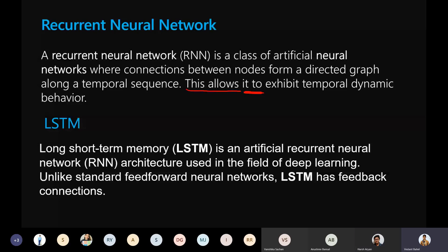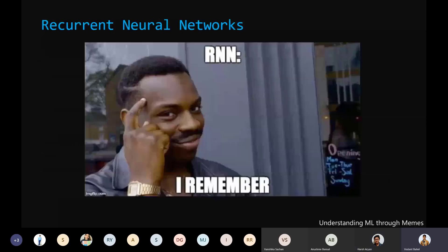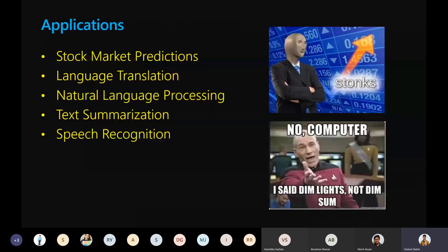RNN is an architecture that remembers what's going on earlier and links that to the next coming data point. That's why LSTM is called Long Short-Term Memory — it works like a feedback connection that has memory. General applications of RNN include stock market predictions, language translation, natural language processing, text summarization, and speech recognition — all areas where memory is required and the next point is dependent on what came earlier.